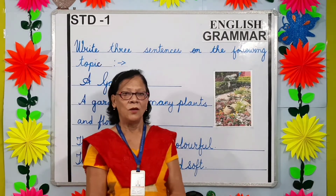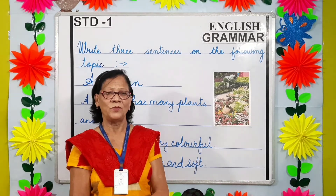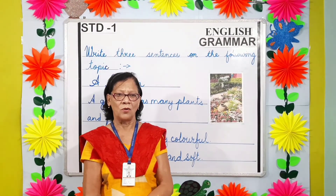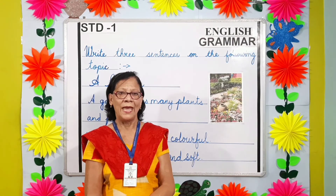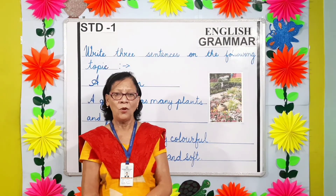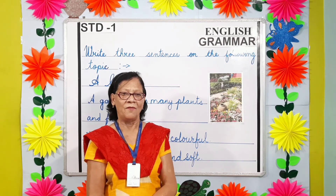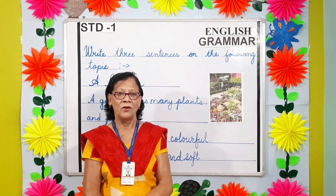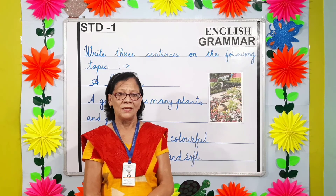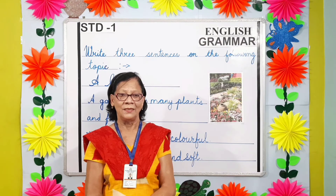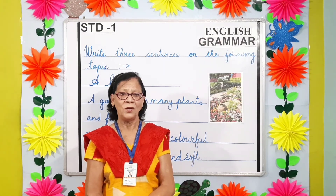Now students, let us recapitulate what we have learned today. We learned about a clown, an elephant, and a garden. I hope you all have understood these topics properly. Related worksheets will be uploaded on the school website. Thank you and have a good day.